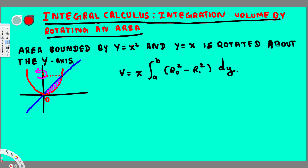Before we equate, we have to change the equations in terms of y — we need to find the x values in terms of y, because we're dealing with rotation around the y-axis. For y = x², taking the square root of both sides gives x = √y. For y = x, we already have x = y, so we don't have to change anything.